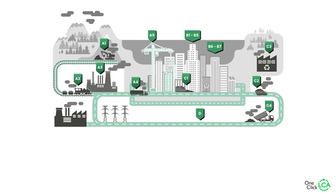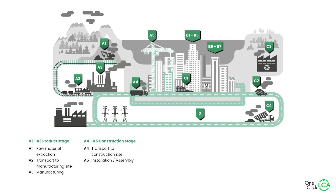It measures these effects across four key stages. The first is production and construction. This involves creating and assembling building materials — it covers stages A1 to A5, and it's where the embodied, or upfront, carbon is generated. We've made a video about embodied carbon; check it out in the description.